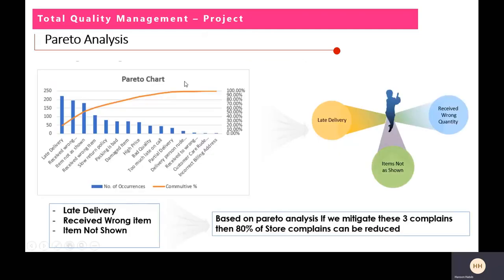The conclusion shows that three complaints — late delivery, received wrong quantity, and item not as shown — are causing the major effect. What Pareto analysis tells us is that if we find a solution and a way forward for these three complaints, then 80% of the complaints' effect can be reduced. That is all about Pareto analysis for our project.